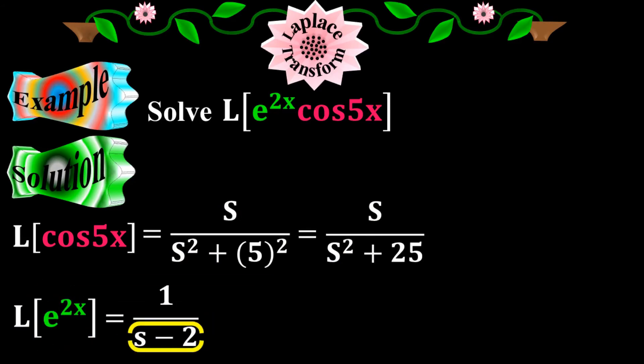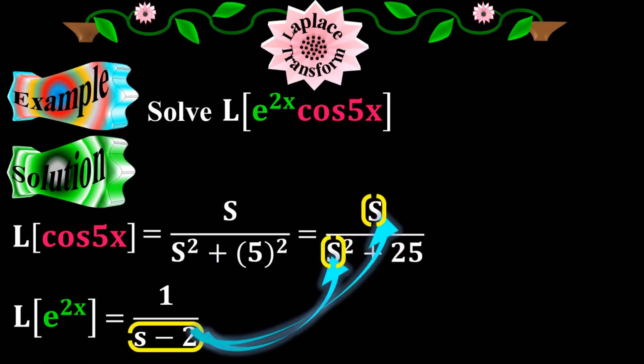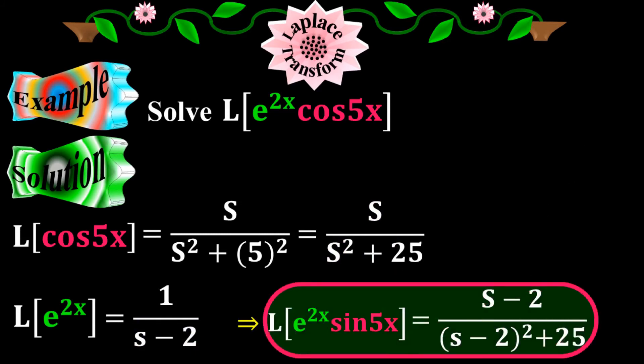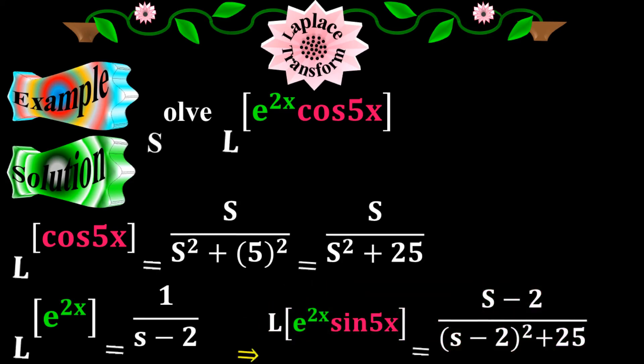Now I'm going to take s minus 2 and will put for s squared, as well as for s at the numerator. Just replace s squared and s by s minus 2 in the above function, which equals to s minus 2 over s minus 2 to the 2 plus 25. Alright, this is my final answer.